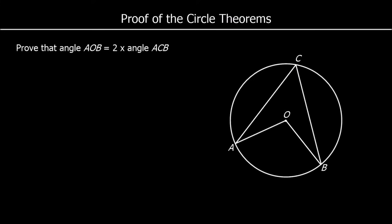Here we have another question. This time we need to prove that angle AOB — the angle at the centre — is twice the angle ACB at the circumference. Again, what we do is create two isosceles triangles by joining the centre of the circle to point C. Triangle AOC has got two radiuses, so the two angles at the base are equal. And triangle OBC — again, two of the sides are radiuses, so they're equal sides, and the two angles at the base of an isosceles triangle are equal.